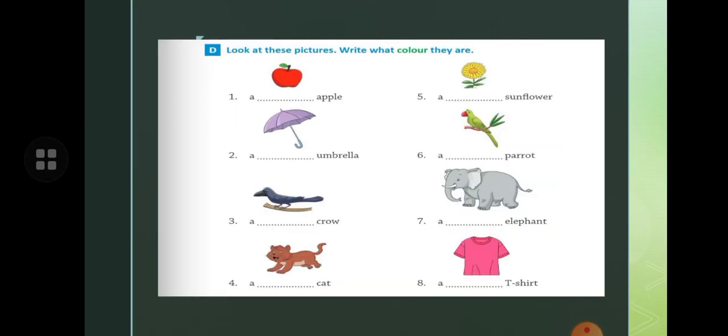Now next exercise is look at these pictures. Write what color they are. Here, apple. Apple is red in color. So you will write the color of the picture. Apple is red. Sunflower. Which color is this? Yellow color. Umbrella. Which color is this? Purple. Parrot. Which color is this? Green. So you have to write the color here.